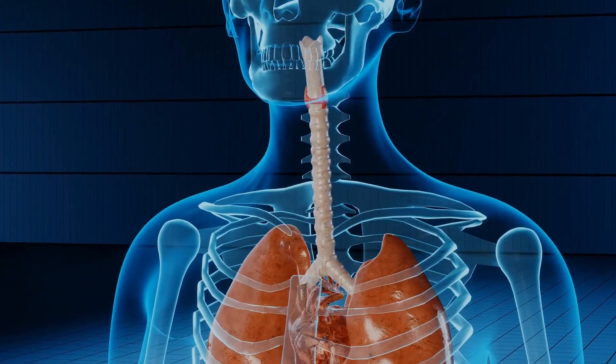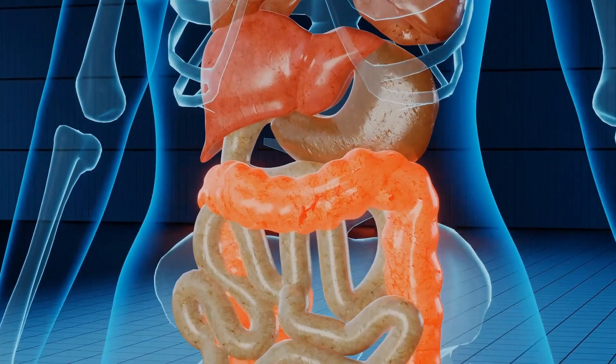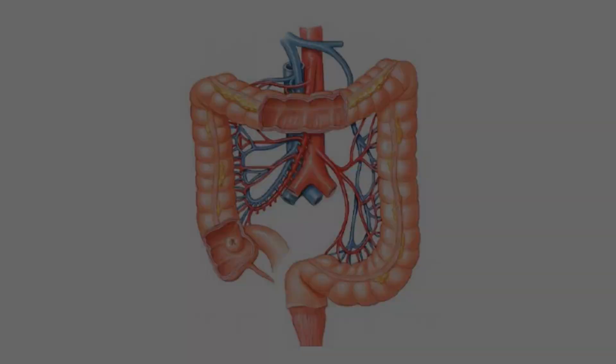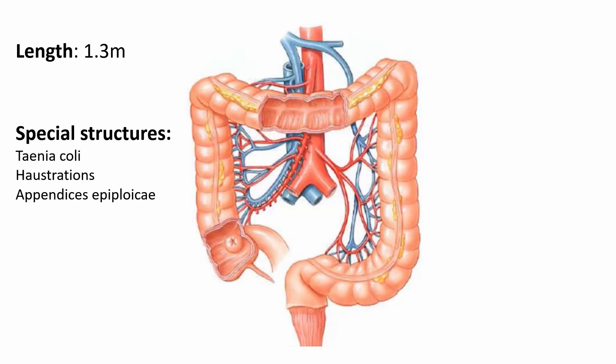The large intestine is an important part of the gastrointestinal tract to know about as a medical student and a doctor. It is roughly 1.3 meters long and contains unique structures, which include the teniae coli, haustra, and appendices epiploicae.